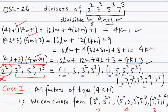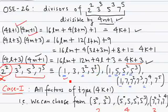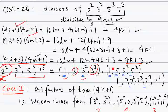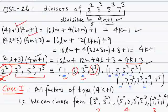For 3: 3^0 = 1 is 4k+1; 3^1 = 3 is 4k+3; 3^2 = 9 is 4k+1; 3^3 = 27 is 4k+3. The blue-marked ones are 4k+1, the others are 4k+3. For 5: 5^0, 5^1, 5^2, 5^3 — all four are multiples of 4k+1. For 7: among 7^0 through 7^5, three are 4k+1 and the rest are 4k+3. These are the options available to us.